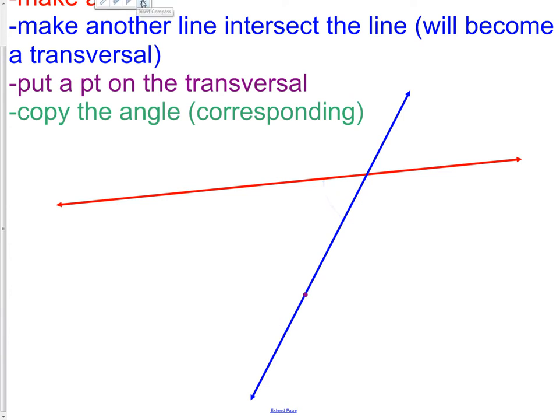We start by getting our compass, putting the compass point at the vertex of the angle. My compass point is at the vertex of the angle and I'm going to simply draw an arc that crosses both sides. The blue side and the red side.